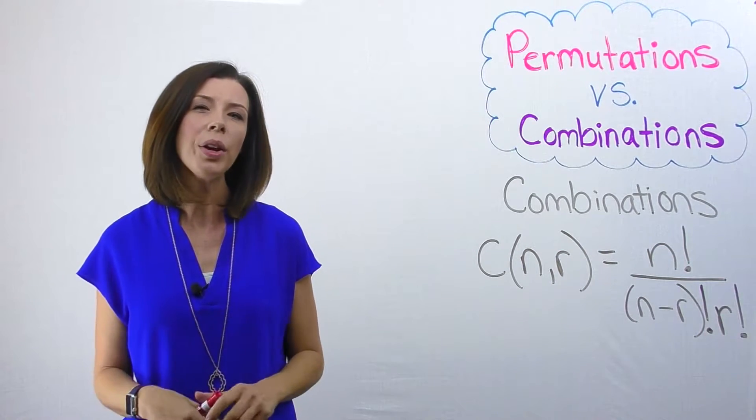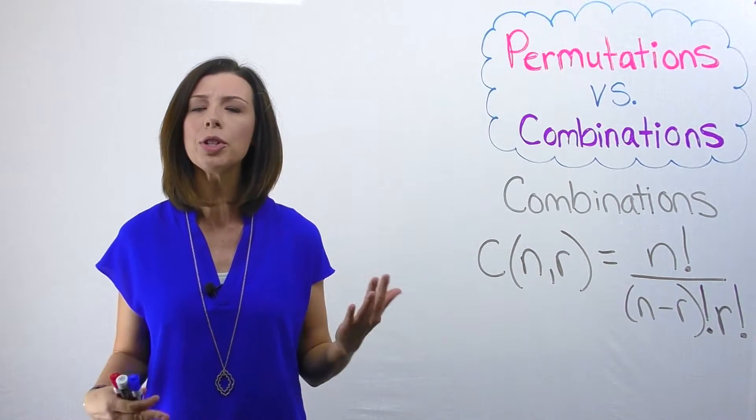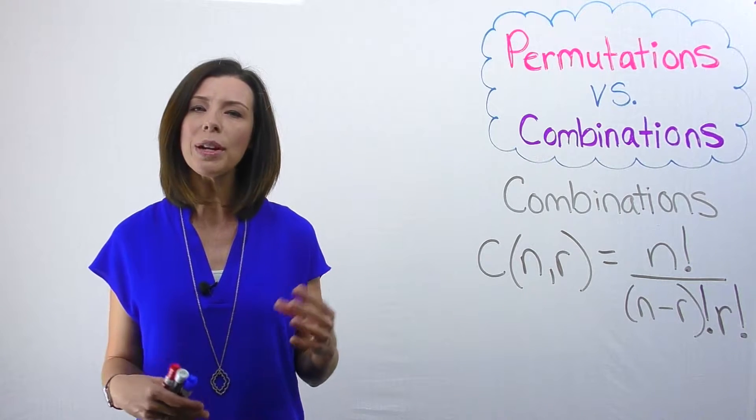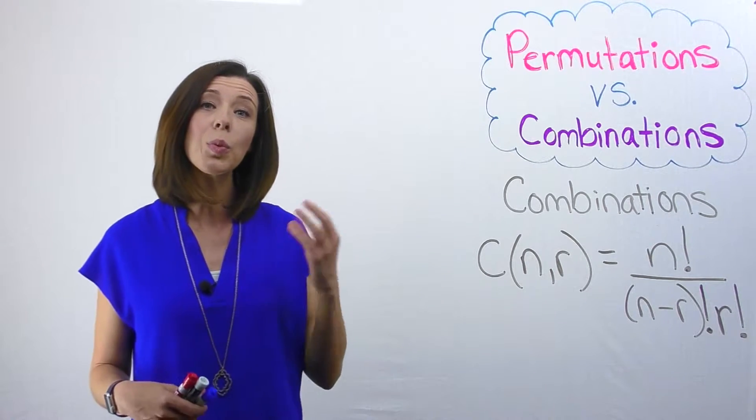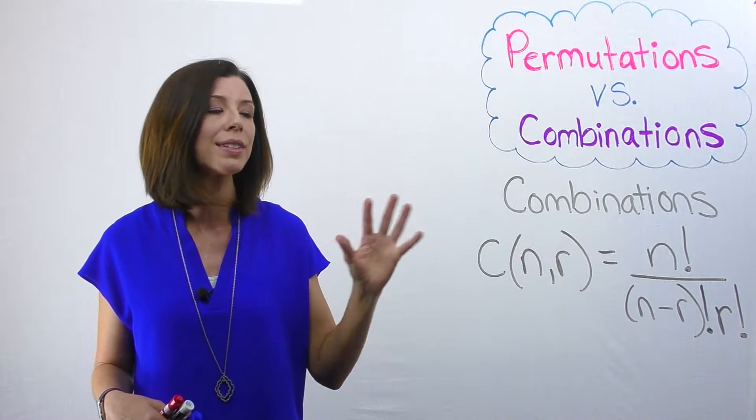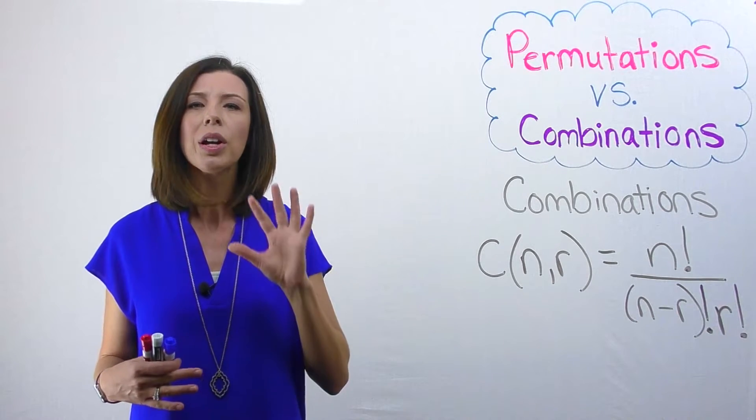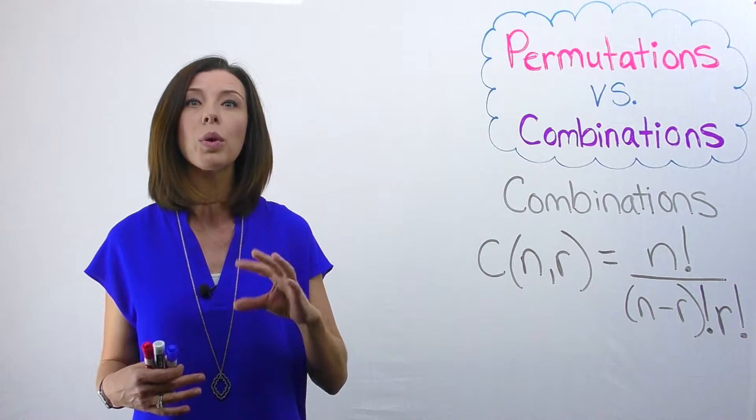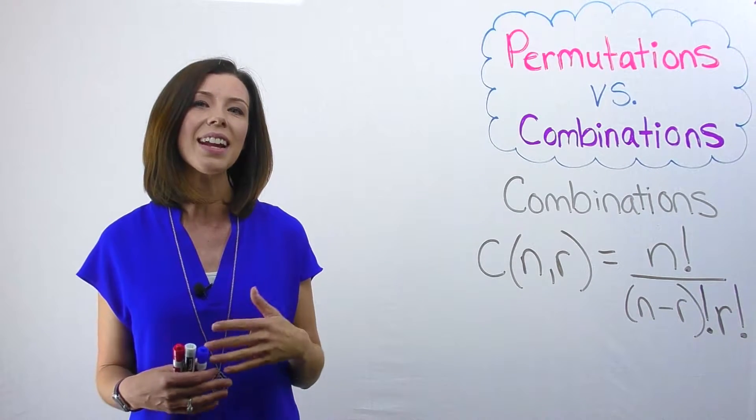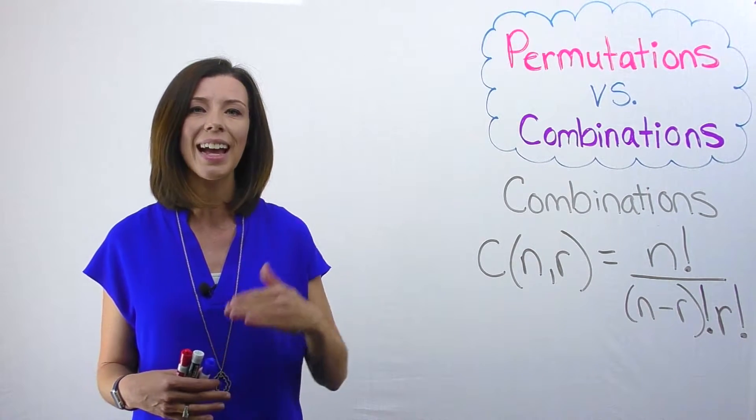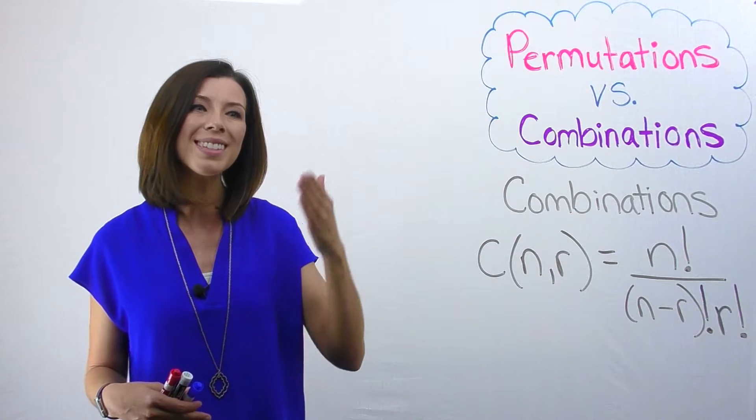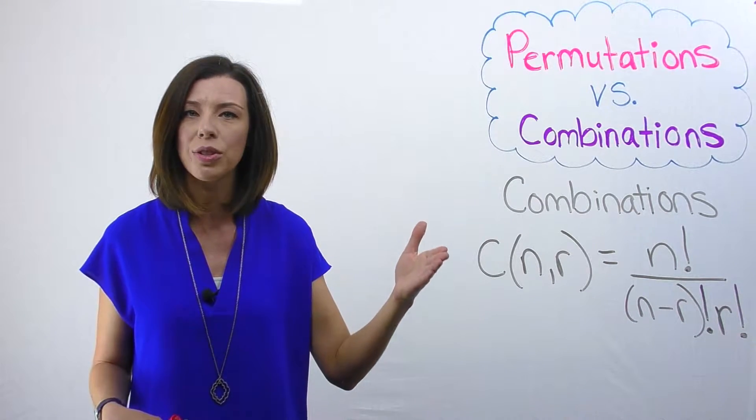If you're wondering how I knew that was a combinations problem, let me just show you my thinking. This situation is a combinations problem because we can pick those three students out of the five and it doesn't matter the order. So let me give you a better example of where order would matter. Let's say that I have five students and I'm trying to decide who's going to be President, Vice President, and Secretary.